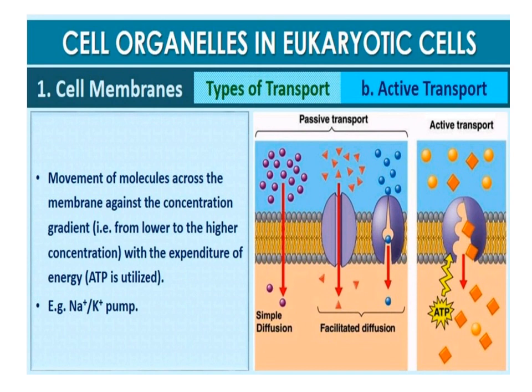A few ions or molecules are transported across the membrane against their concentration gradient, that is from lower concentration to higher concentration. Such transport is an energy-dependent process in which ATP is utilized, and it is called active transport. For example, the sodium and potassium pumps.